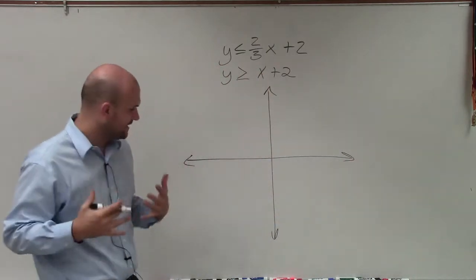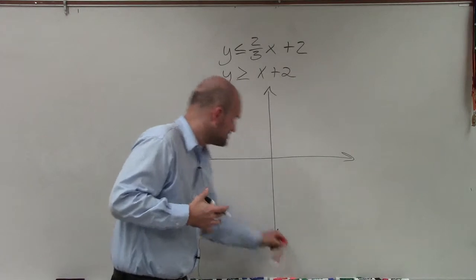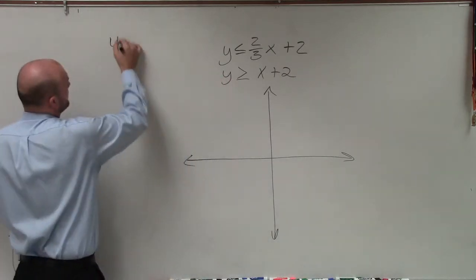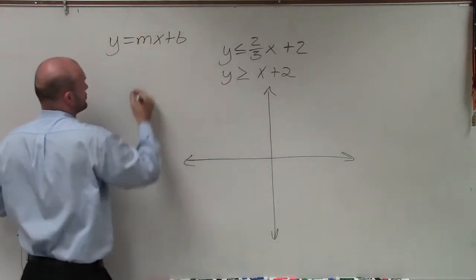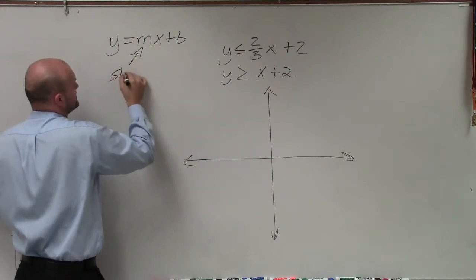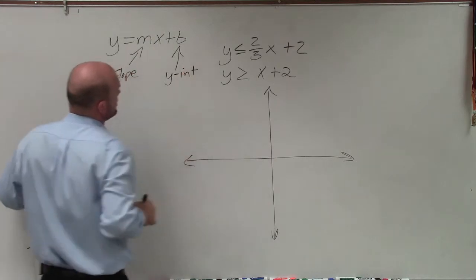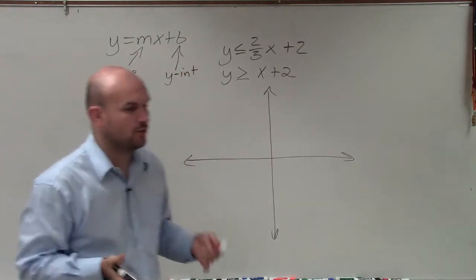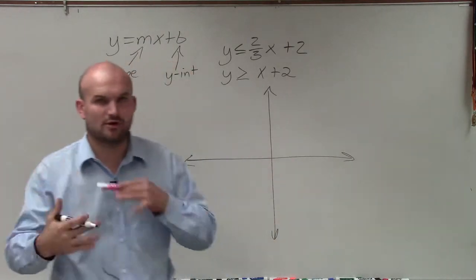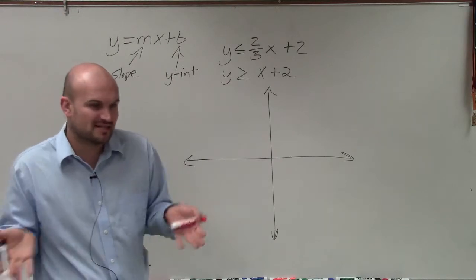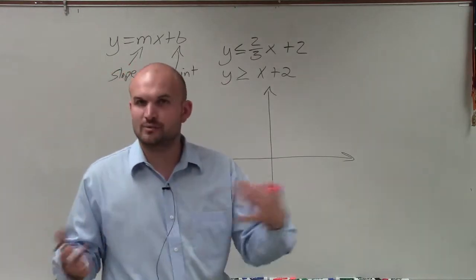So when graphing equations, the main important thing we want to remember, especially when we have them in slope-intercept form, is that m represents the slope and b represents the y-intercept. So in each of these linear inequalities, I'm just going to sometimes revert back to equations, because basically the graphing is going to be the same until we get to the shading.